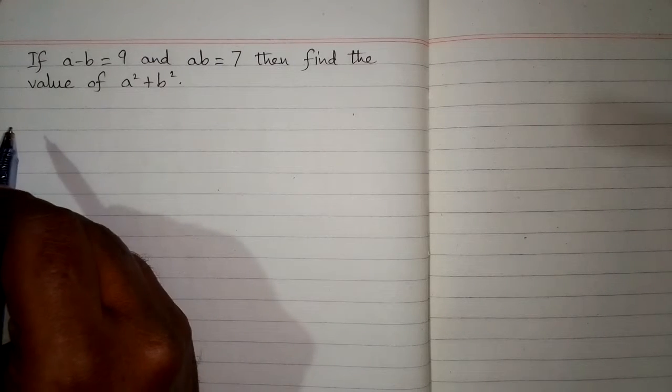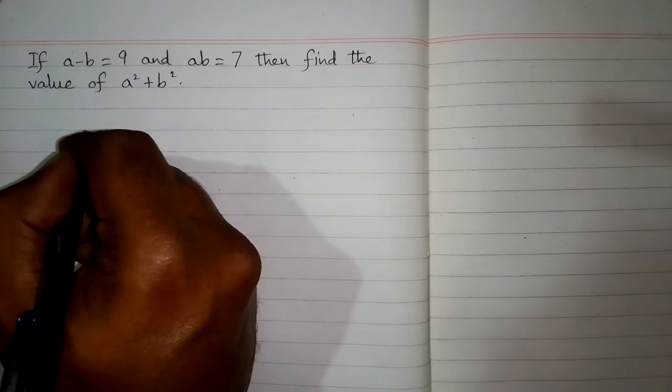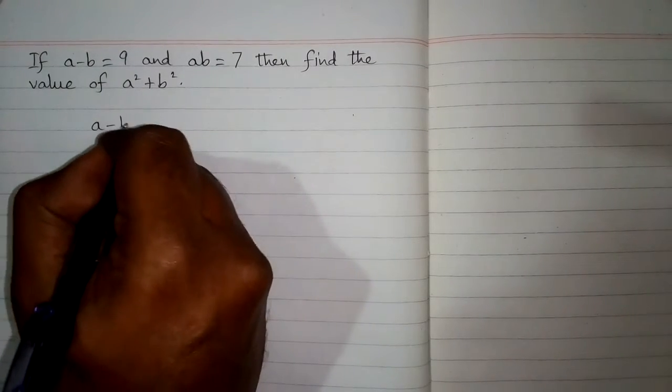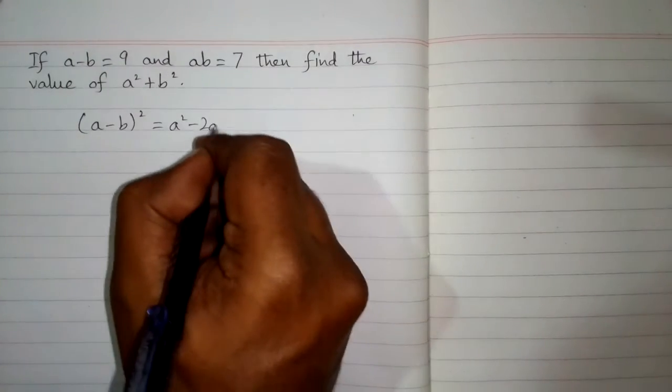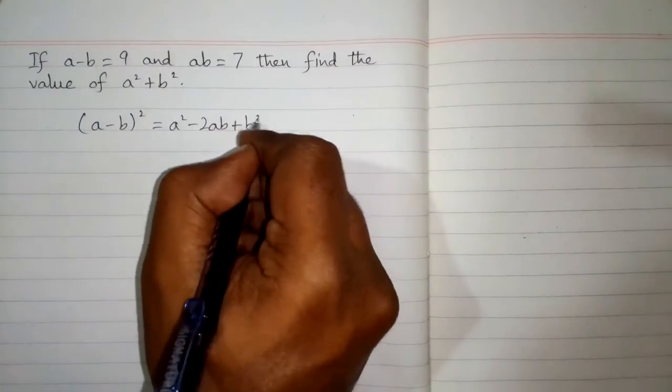In order to solve this problem, we can use an algebraic identity which is A minus B whole square is equal to A square minus 2AB plus B square.